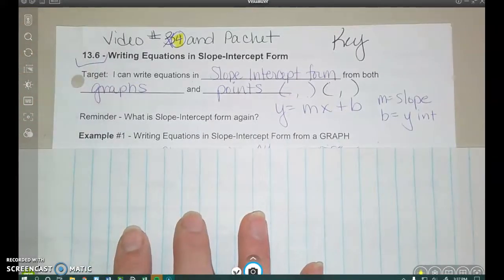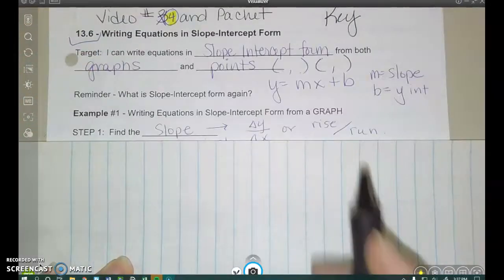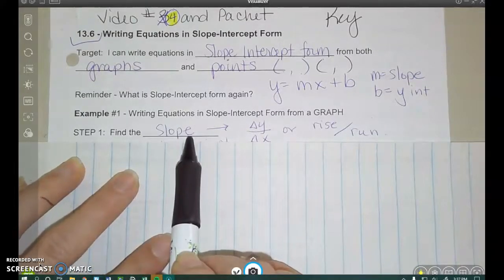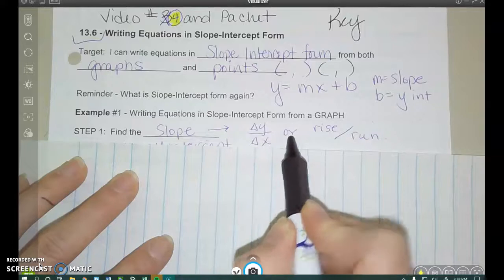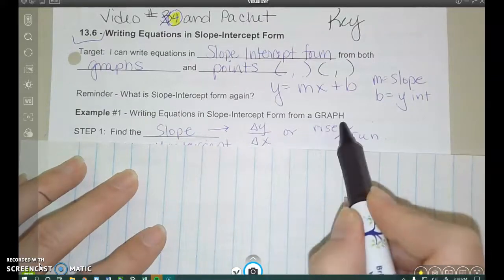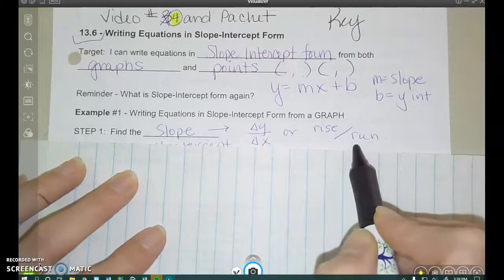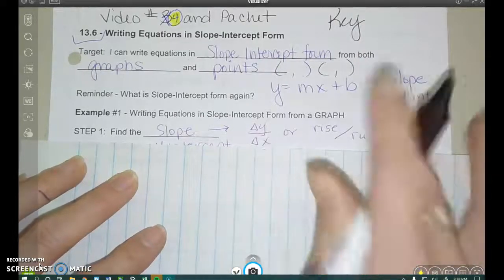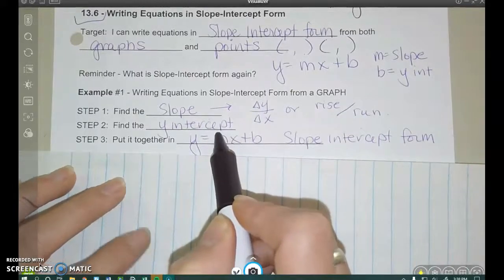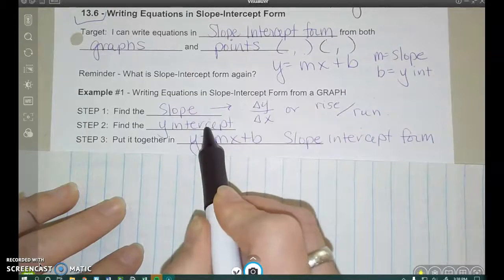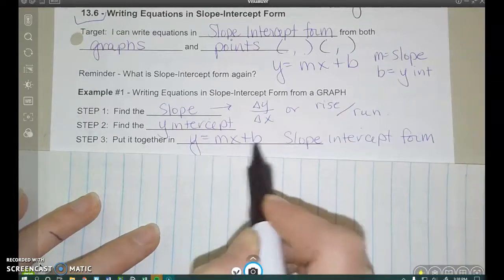Okay, so here we go. Our first examples. We're going to be writing the equation from a graph. Well, here's our steps. First of all, we need to be able to look at the graph and find the slope. So we did this a lot in section 13.2. If you remember, slope is change in y over change in x, or you might see it written as rise over run. Then we also need to look at the graph and find the y-intercept, find where it crosses the y-axis, and then put it all together.